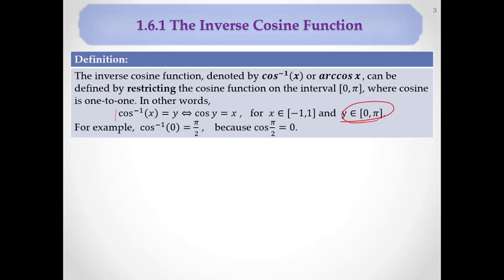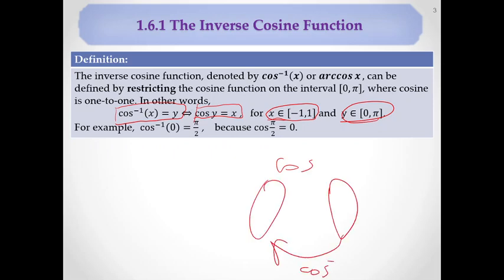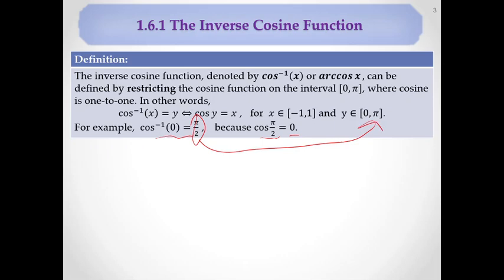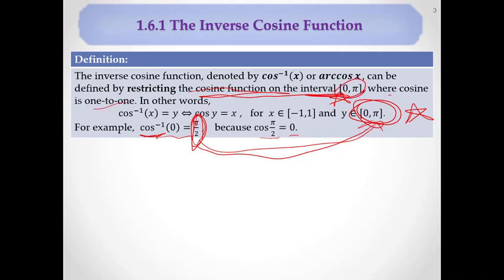Cosine inverse of x equal to y means cosine of y is equal to x, where x can be any number between minus one and one. The values should be between minus one and one because cosine takes angles to that range. The angle must be from zero to pi. So cosine inverse of zero is pi over two, because cosine of pi over two is zero. We restrict cosine onto the interval zero to pi, making it one-to-one.